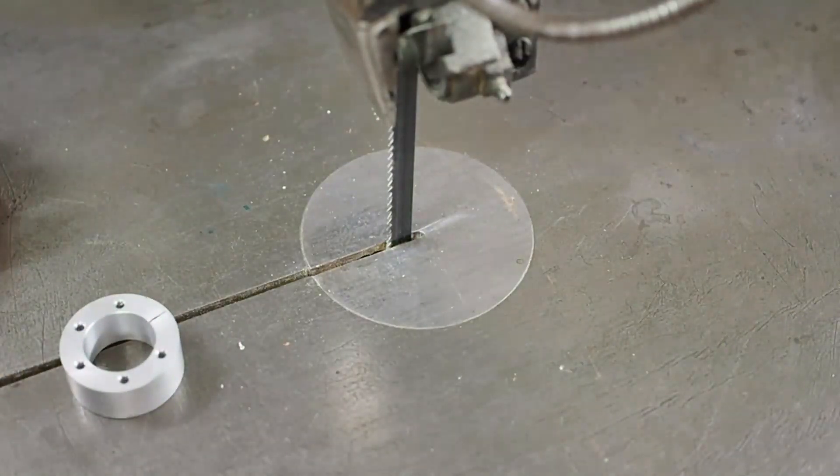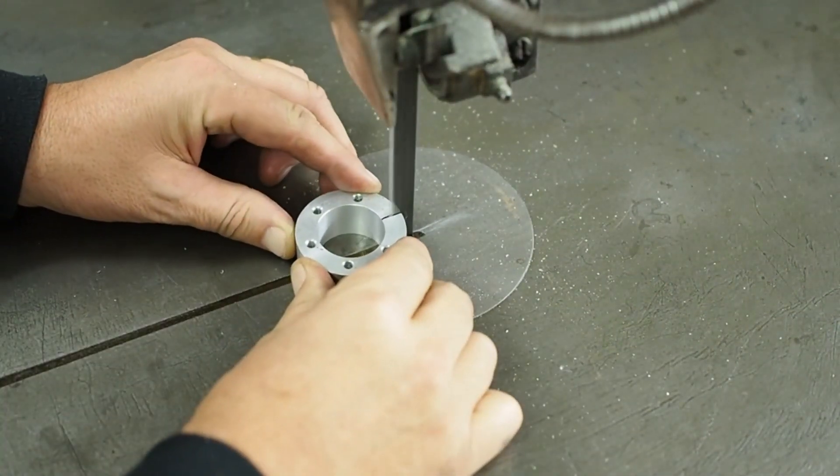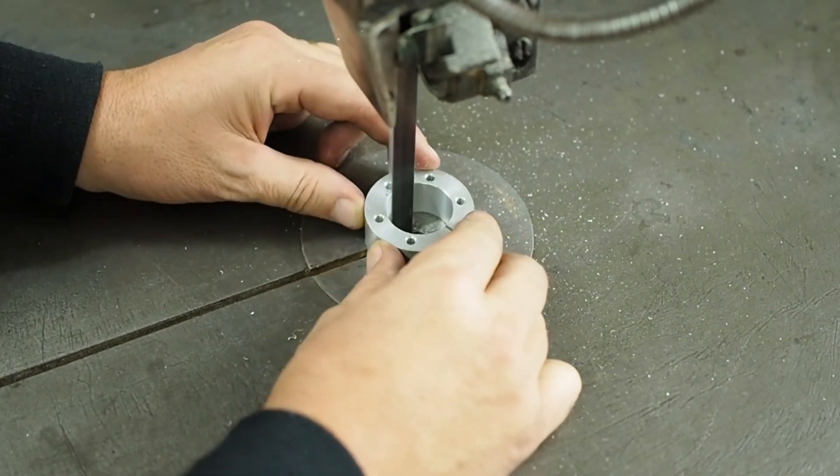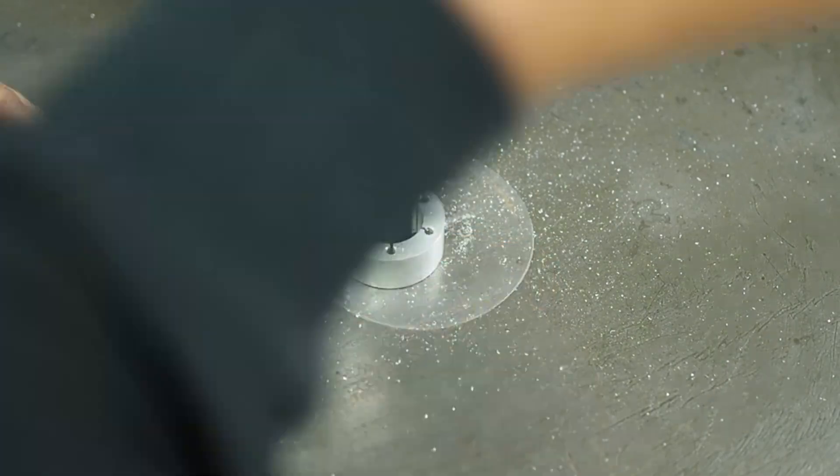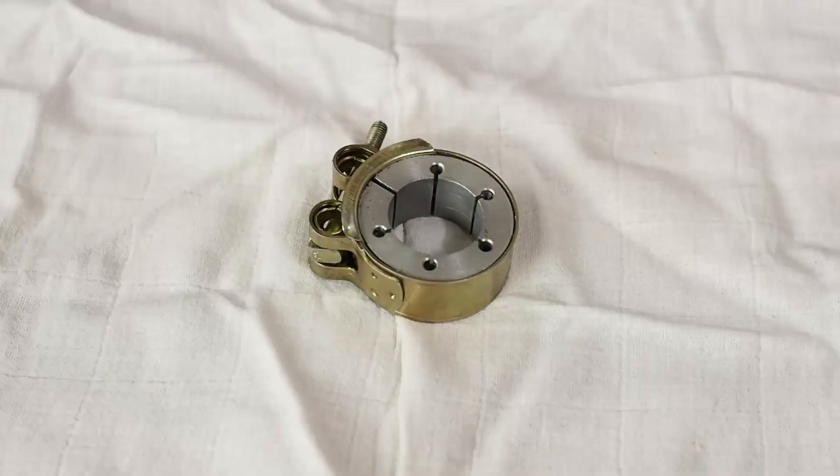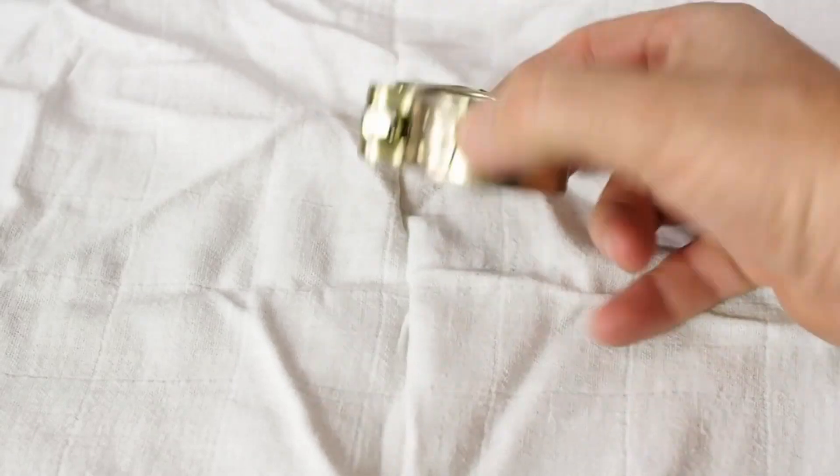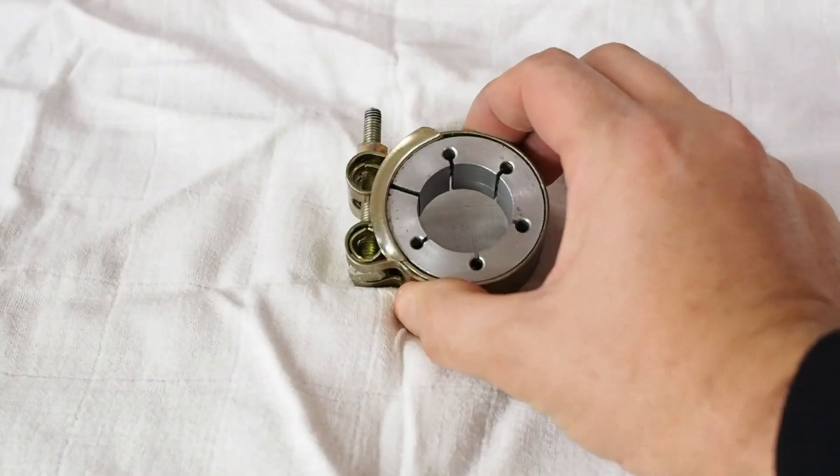I can now finish off the lap. This is the finished lapping ring, it just uses a hose clamp to reduce the diameter.